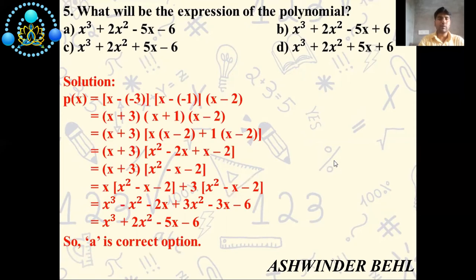Now we will solve this question. First of all, we will suppose p(x) = [x - (-3)] × [x - (-1)] × (x - 2). Now x + 3, that minus minus is plus, so x + 1. Then x - 2. Now we will multiply these two terms.